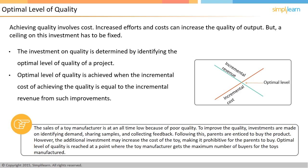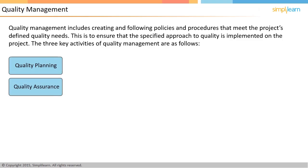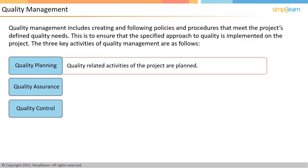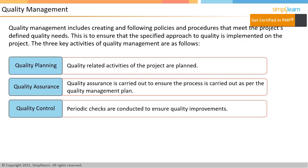Now that we are clear on the concept of quality, in the next screen let us discuss quality management. Quality management involves performing activities like creating standard policies and procedures and ensuring that those standard procedures are being followed properly in the project. It aims to ensure that the project meets all the initial agreed requirements without any deviation, and that the specified approach to quality is implemented on the project. Three broad activities are done as part of quality management: quality planning, quality assurance, and quality control. Quality planning is the first step when quality-related activities of the project are planned. Quality assurance is the next stage of implementing those quality plans. Quality control is the last stage when periodic checks are done to see if project quality is improving.